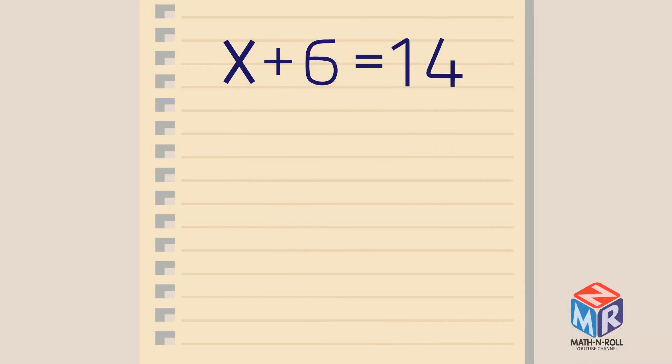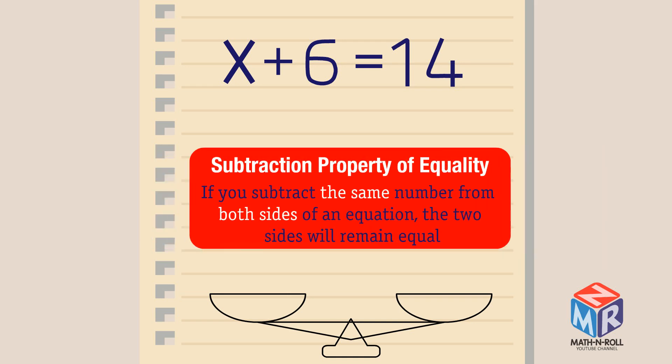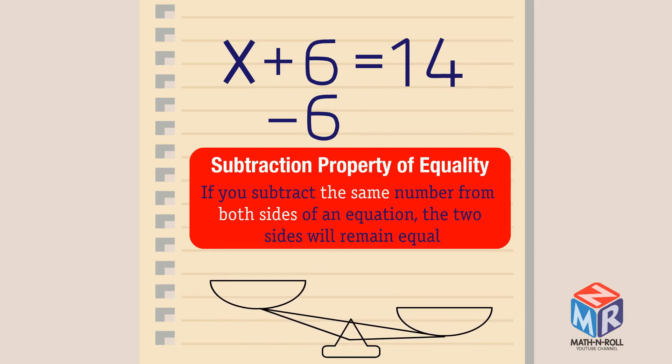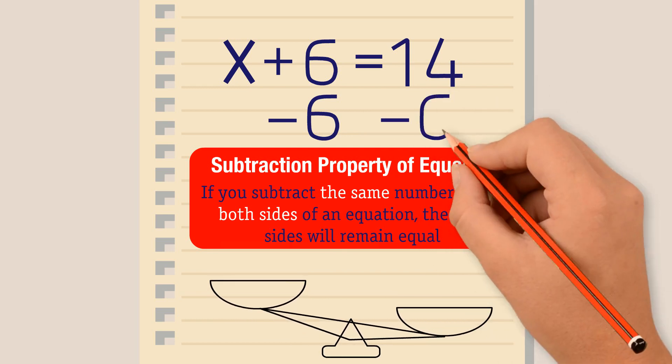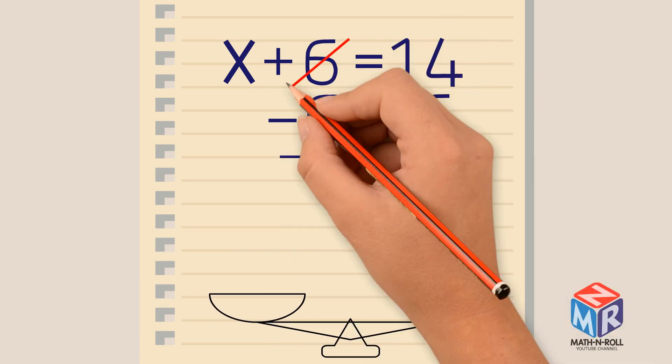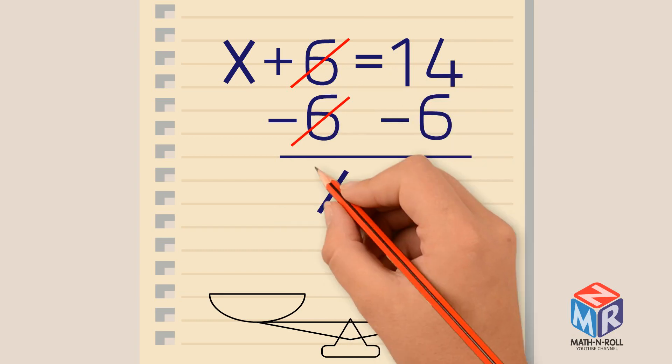x plus 6 equals 14. Our goal is to keep the variable, which is x, on the left side, and all the known values on the right side. To solve this equation, we will be using the subtraction property of equality. This property says, if you subtract the same number from both sides of the equation, the two sides will remain equal. To solve, we subtract 6 from both the left and the right side. We cancel out, and we are left with x equals 8.